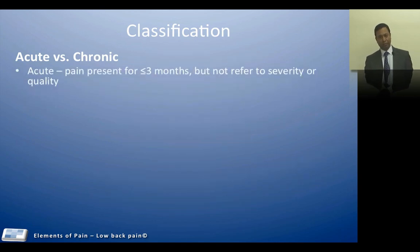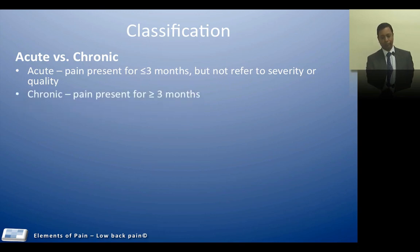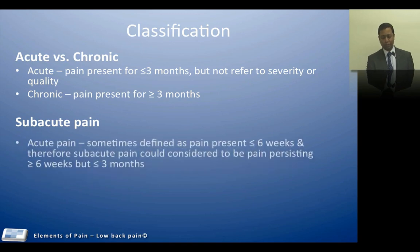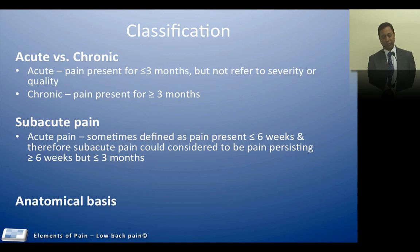When we talk about the classification of low back pain, the commonest classification describes it as acute and chronic — with less than three months being acute pain and beyond that being chronic pain. Sometimes we use subacute as an included criteria, where acute pain is less than six weeks, subacute is six weeks to three months, and chronic is beyond three months.